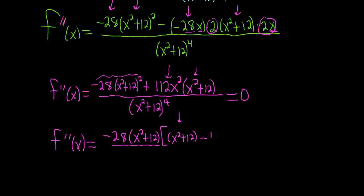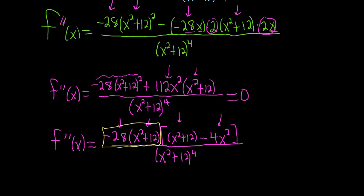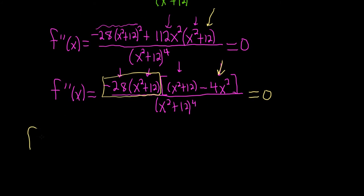So it leaves us with negative 4x squared. Let me double check: negative 4 times negative 28 gives positive 112 — yes. So we have that piece and the x squared. One (x squared plus 12) in the numerator cancels with one in the denominator, (x squared plus 12) to the fourth, so that becomes cubed. We then have negative 28 times (negative 3x squared plus 12), all divided by (x squared plus 12) cubed.